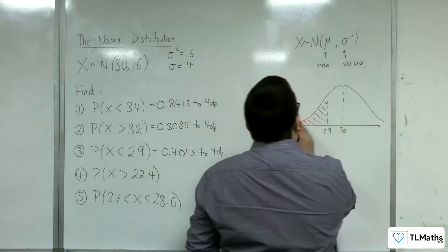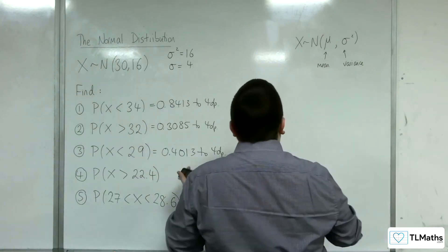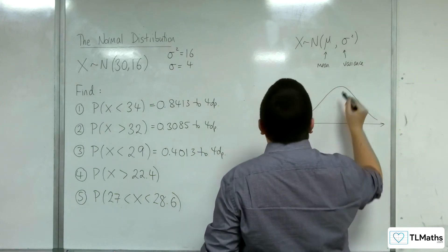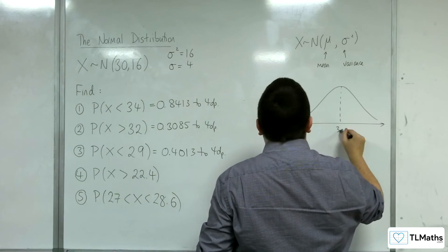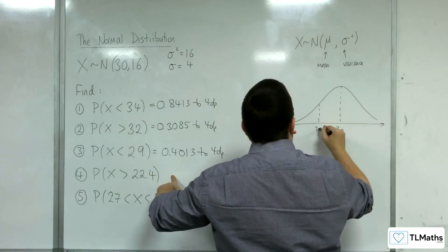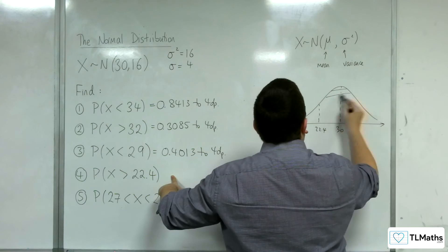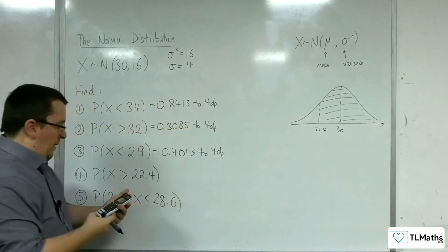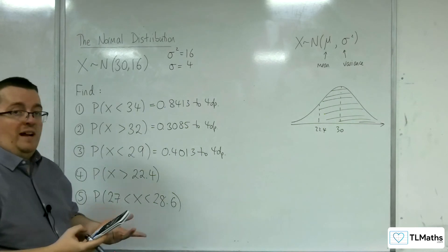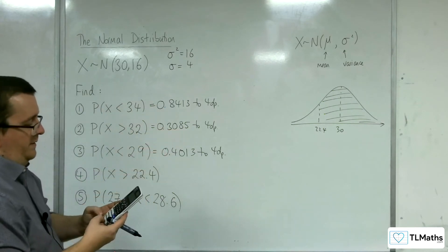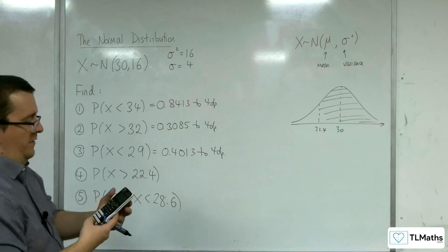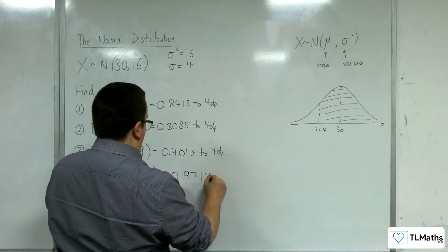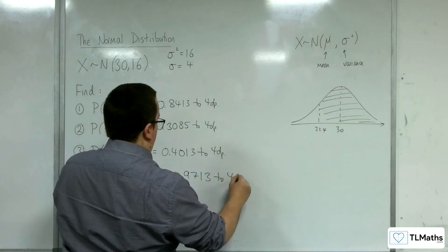Okay, there's 30, 22.4, so greater than that value. So our lower value will be 22.4. Our upper value will be a nice large number further down the line, so 1000 say. So we should get 0.9713 to 4 decimal places.